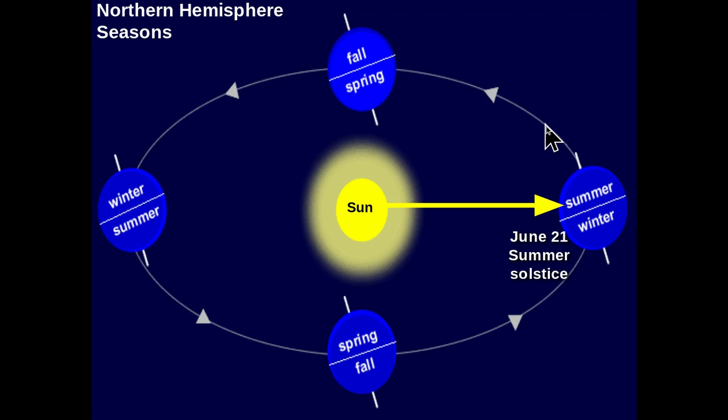If we allow the Earth to go from June through July, August, and September, and we look at the direction of sunlight on the Earth in September, the sunlight rays are directly on the equator. Because of the Earth's tilt towards the sun, the rays have now dropped down to the equator. This is known on September 21st as the autumn equinox. The term equinox means that the sunlight is distributed equally on both hemispheres — about 12 hours of sunlight in the Northern Hemisphere and 12 hours in the Southern Hemisphere.